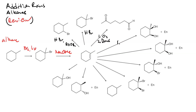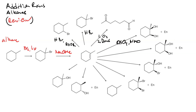To get the anti-diol we need to go through an epoxide, and we can do that with a peroxy acid (RCO3H), followed by an acidic workup.